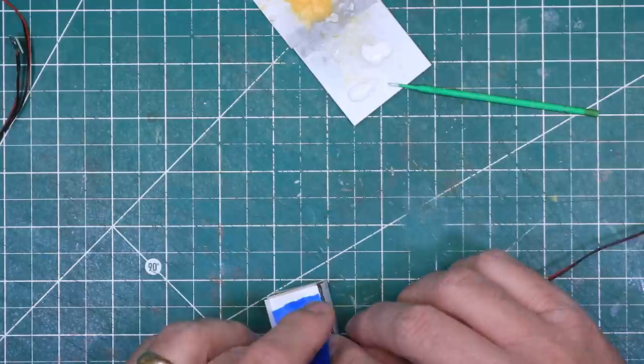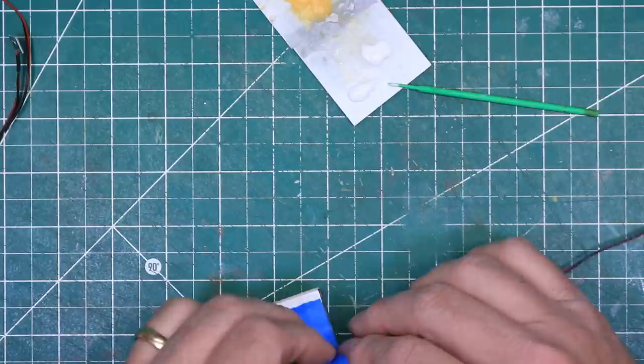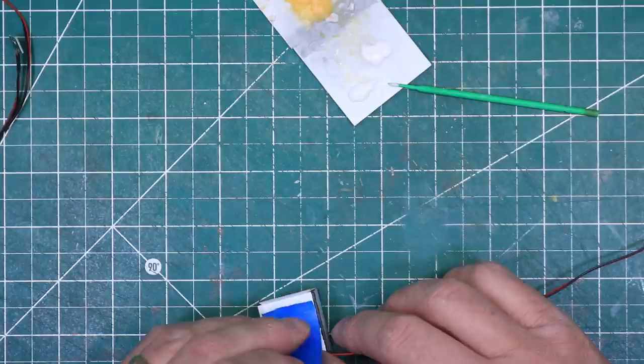Ten LEDs are supplied with this combo kit, but there are actually spaces for 12. On top of that, one of my supplied LEDs did not work, so I ordered three additional LEDs to replace the one that didn't work and to light the other two rooms.